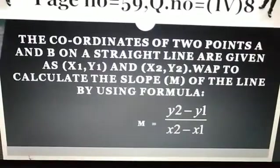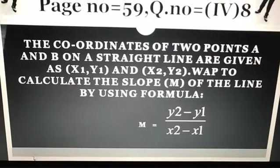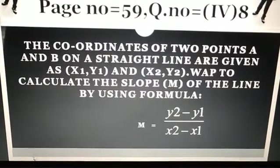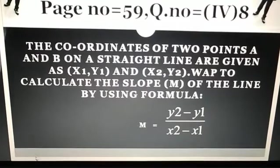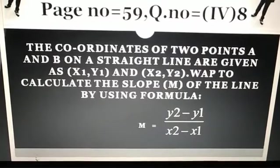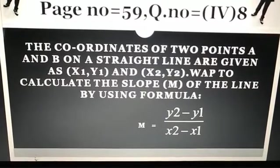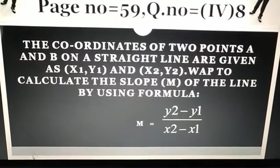The question is: the coordinates of two points A and B on a straight line are given as x1, y1 and x2, y2. Write a program to calculate the slope M of the line by using the formula M equals y2 minus y1 divided by x2 minus x1.